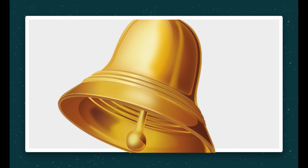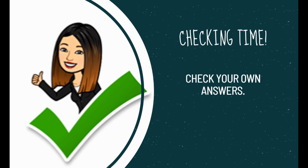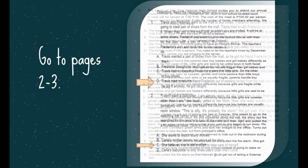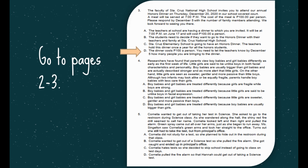It's checking time! Let's see if you got your answers correctly. Check your own work. Going back to pages 2 to 3: number 1 is letter D. For number 2, the correct answer is letter C. For number 3, the correct answer is letter D. For number 4, the correct answer is letter A. And for number 5, the correct answer is letter B.